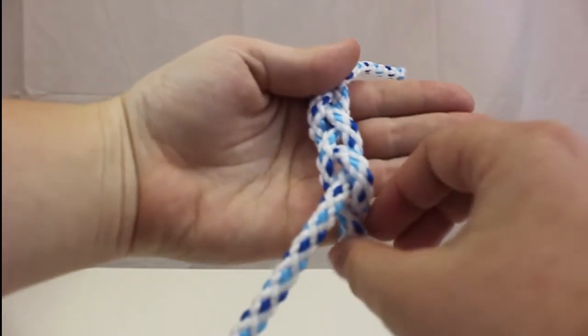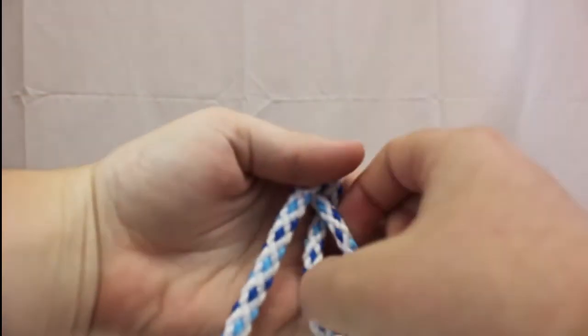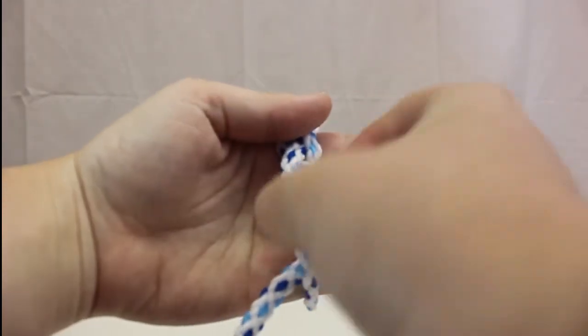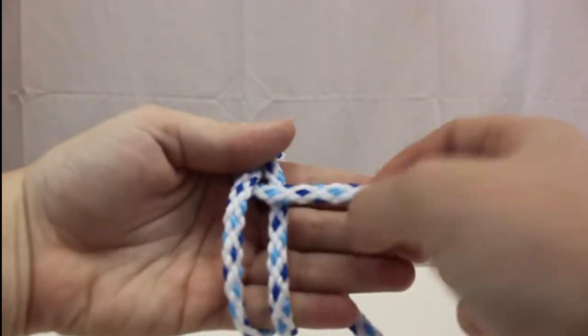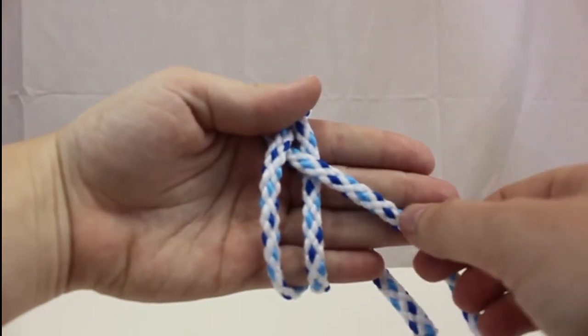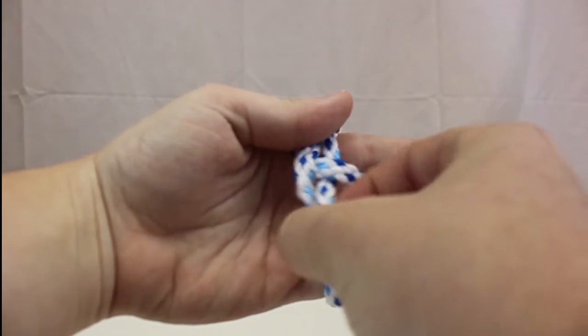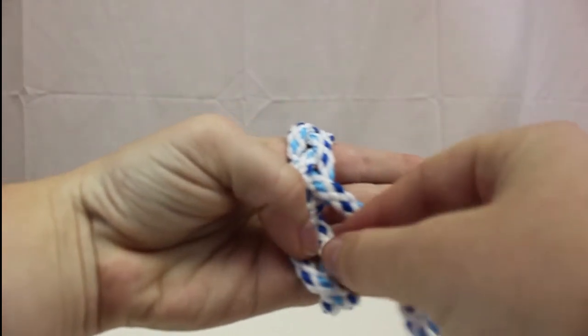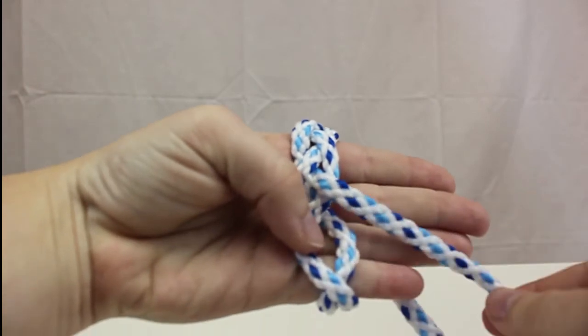We're going to adjust again so we're always working in the palm of our hand. Then we're going to do the exact same thing we just did. Under and over to the right. Then create that same oval again and take the working end and put it through, under, and over that oval.